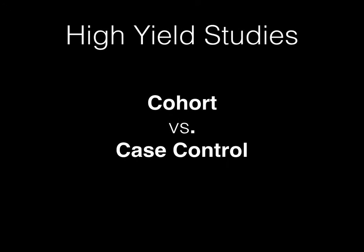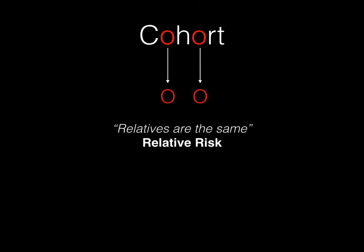Let's start with the cohort study. When you think of cohort versus case control, we're going to focus on the vowels in the name. Cohort has two O's — I've highlighted those and isolated them. Since these are the same letters, think of it as relatives being the same — you are similar to your relatives. So O and O being the same helps remind us that a cohort study is what you use for relative risk. Cohort gives you the relative risk. This is a high yield association you have to cement into your brain.